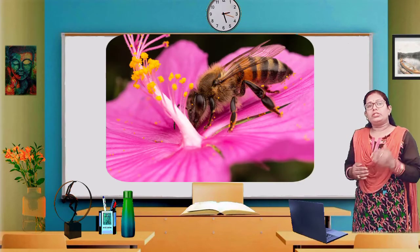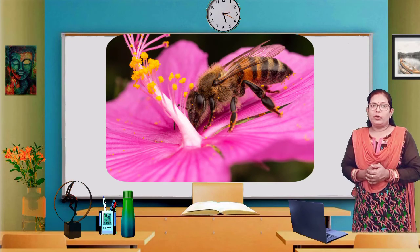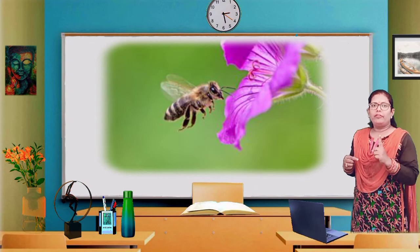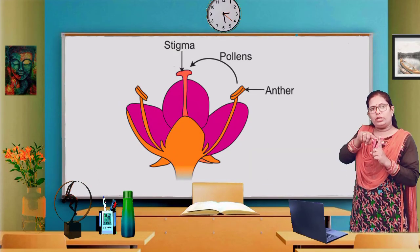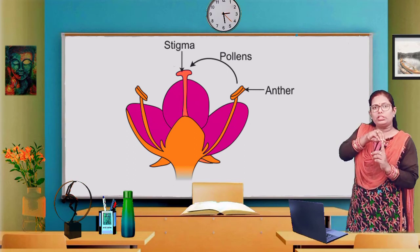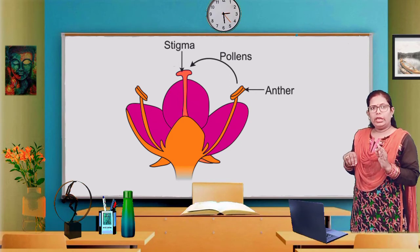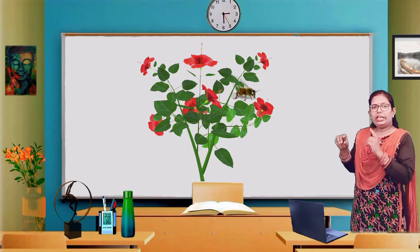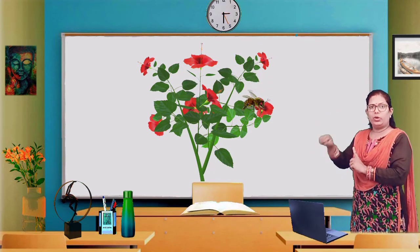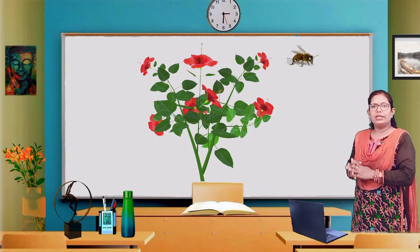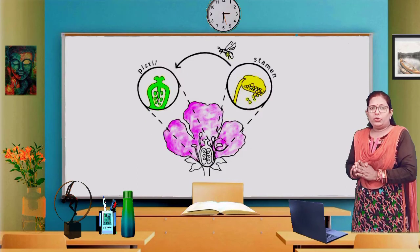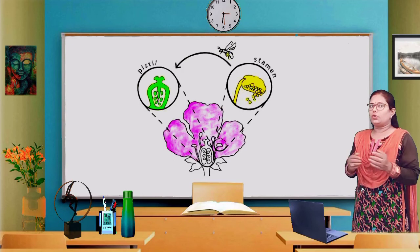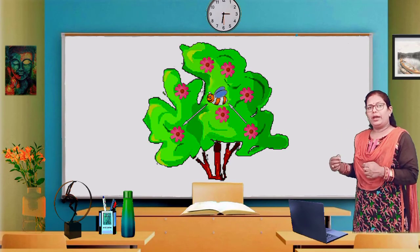Self-pollination can occur in two types. When pollination occurs within the same flower of the plant, it is known as autogamy. When self-pollination occurs between two flowers on the same plant — from one flower to another — this is known as geitonogamy. So autogamy is pollination within the same flower, and geitonogamy is pollination between two flowers borne on the same plant.